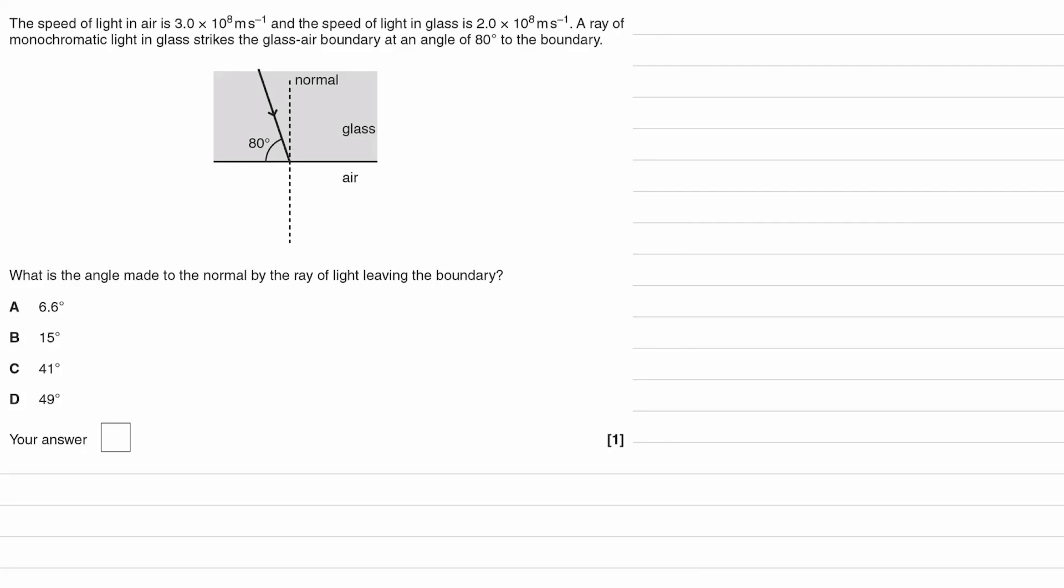The speed of light in air is 3 times 10 to the 8 meters per second, and the speed of light in glass is 2 times 10 to the 8. A ray of monochromatic light in glass strikes the glass-air boundary at an angle of 80 degrees to the boundary.